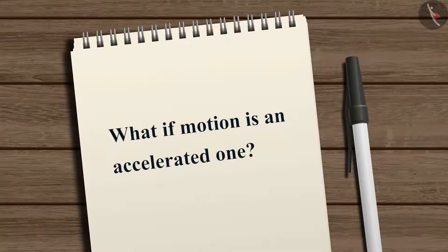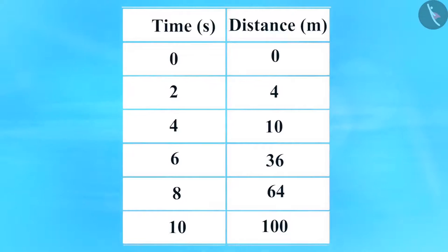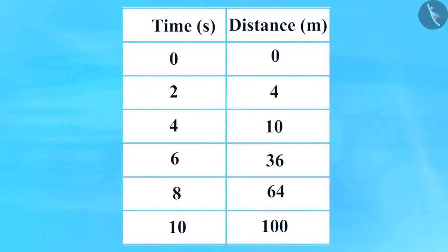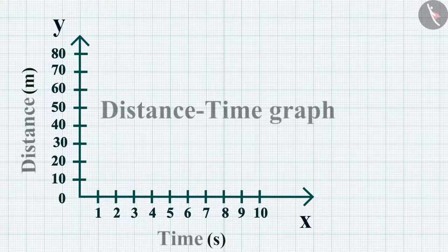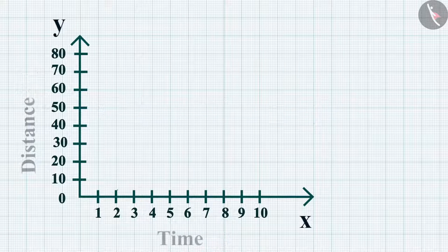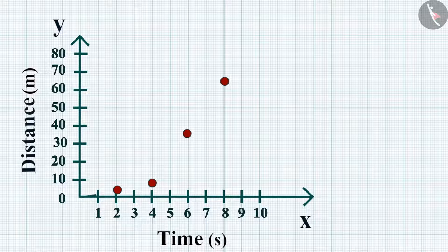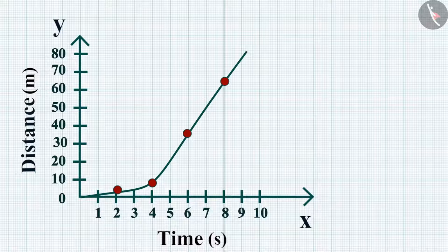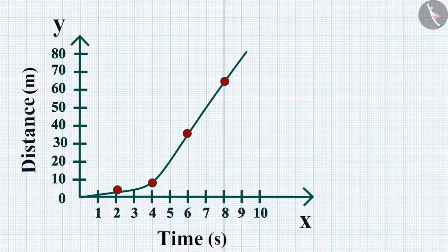What if the motion is an accelerated one? We can plot a distance-time graph for accelerated motion as well. Given here is a table which shows the distance covered by the car in the respective time interval. Can you plot the graph using the data in the given table? Once you plot the points, your graph will look like this. The nature of this graph shows non-linear variation of the distance travelled by the car with time. Thus, the graph shows the motion of an object with non-uniform speed.